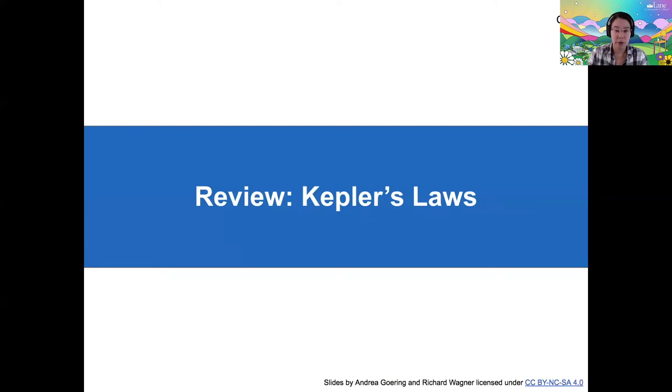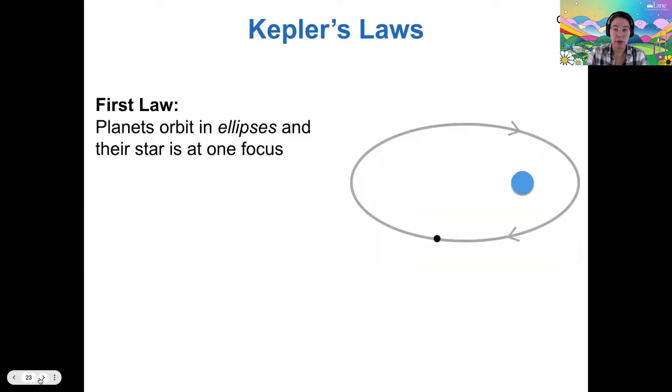I want to move on to Kepler's laws and tie our theory of gravity into our three laws of planetary motion. As a reminder, Kepler found that planets orbit in ellipses and that the star is at one focus of the ellipse.